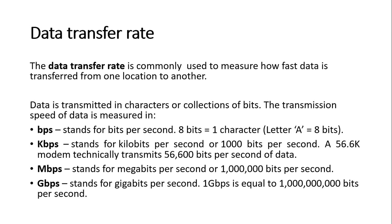The data transfer rate is a measure of how fast data can be transferred from one location to another. It is measured in bits per second as a starting point. Recall the units of data measure: bit, byte, kilobyte, megabyte, gigabyte, and terabyte. Similarly, internet speed is measured as bits per second, then kilobits per second when there are a thousand bits, then megabits per second, then gigabits per second — that is a billion bits per second.